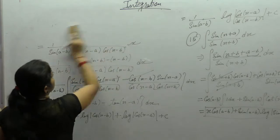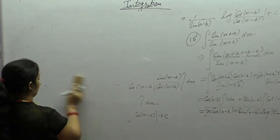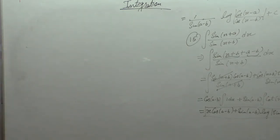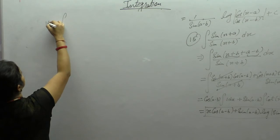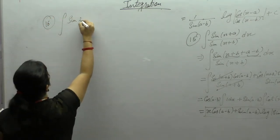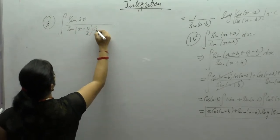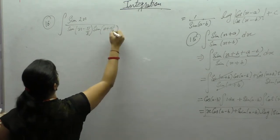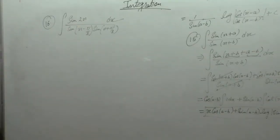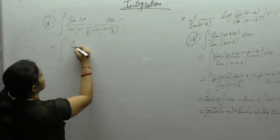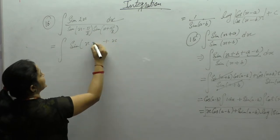Now the next question is Question 16: Integral of sin2x divided by [sin(x - π/3)·sin(x + π/3)] dx. We can write 2x as x+x, then add and subtract π/3.